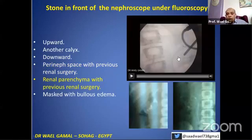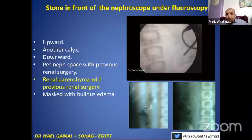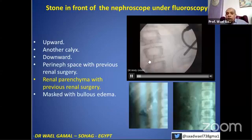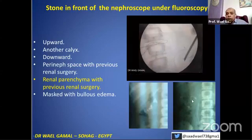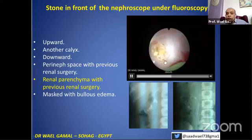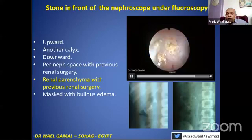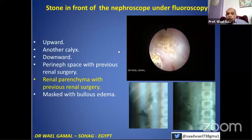In cases with previous renal surgery, consider this: a child with multiple stones in the right kidney presented two months post-operative of right PCNL. He came with stones and hydronephrosis. You have to think first about the PUJ — it may be injured. Also, this stone is embedded inside the renal parenchyma. You have to keep this in mind before doing any manipulation in cases of previous renal surgery.